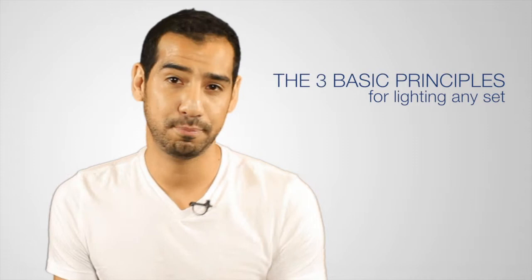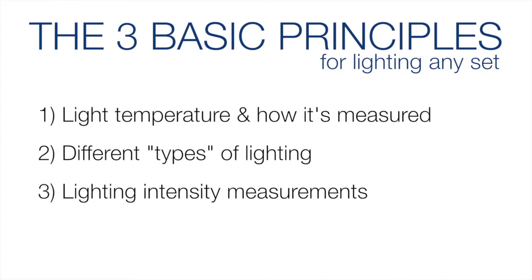So here are the three basic principles that you should know before lighting any set. The first one is light temperature and how it's measured. Secondly, the different types of light produced by these temperatures. And finally, how lighting intensity is measured.